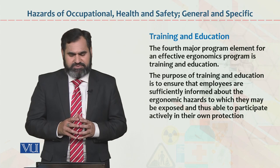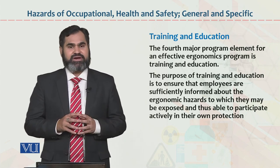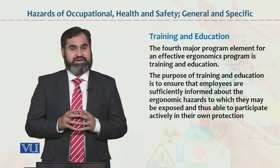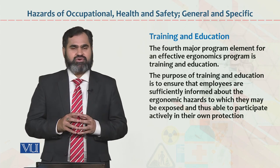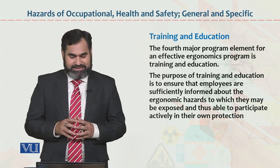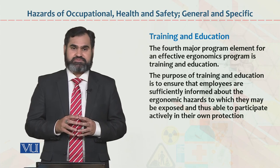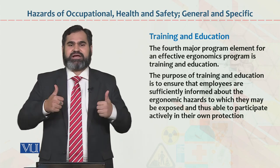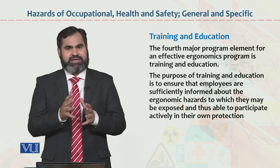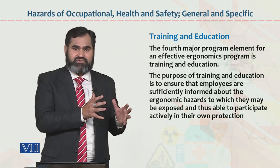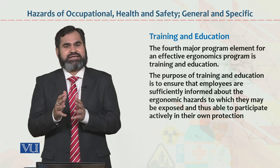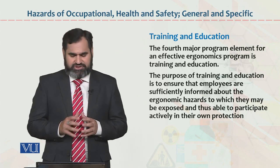The fourth major program element for an effective ergonomic program is training and education. The purpose of training and education is to ensure that employees are sufficiently informed about the ergonomic hazards to which they may be exposed, and are thus able to participate actively in their own protection. Employees should be aware of individual protection, equipment, SOPs, and all aspects related to reducing stress and hazards.